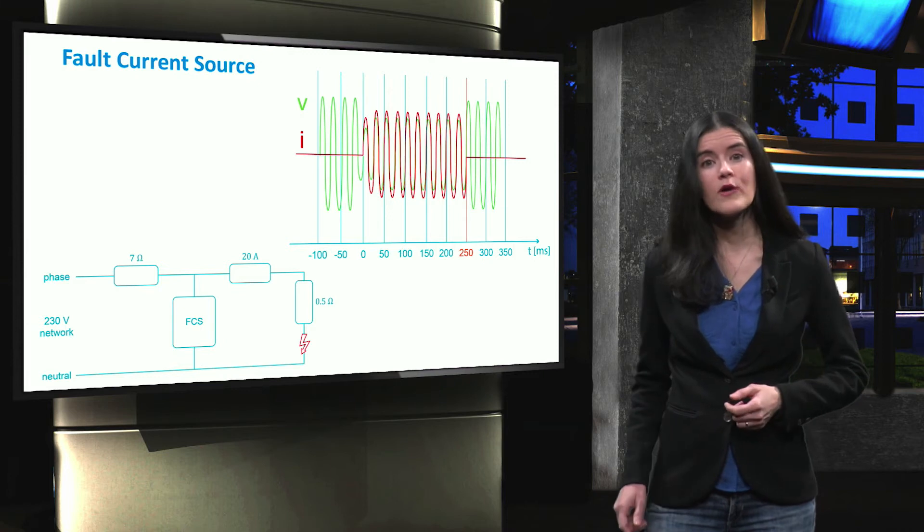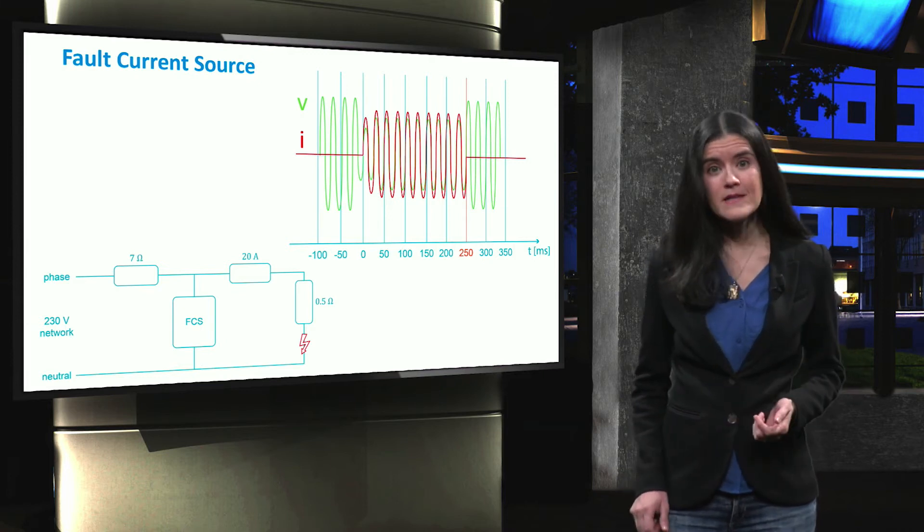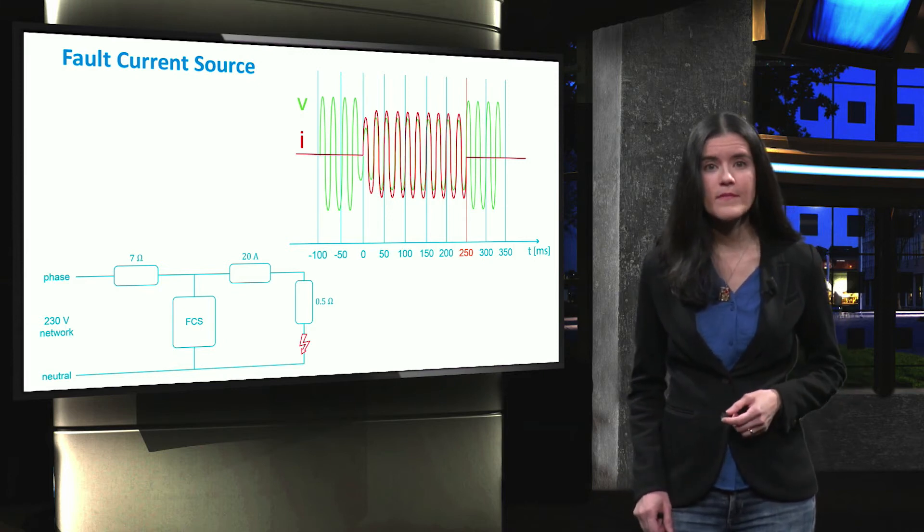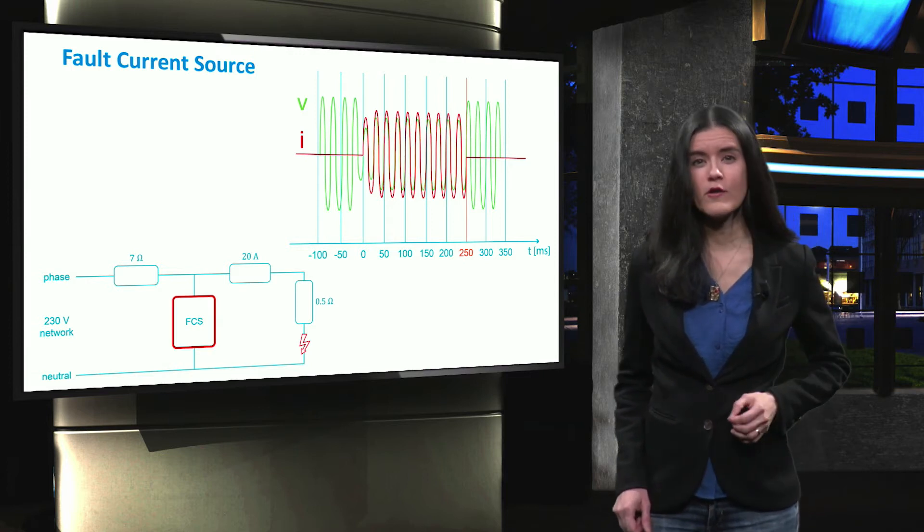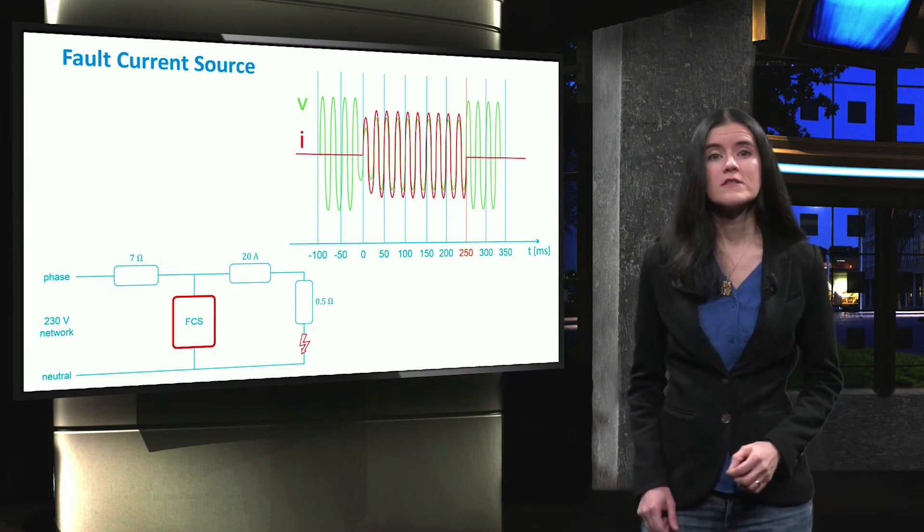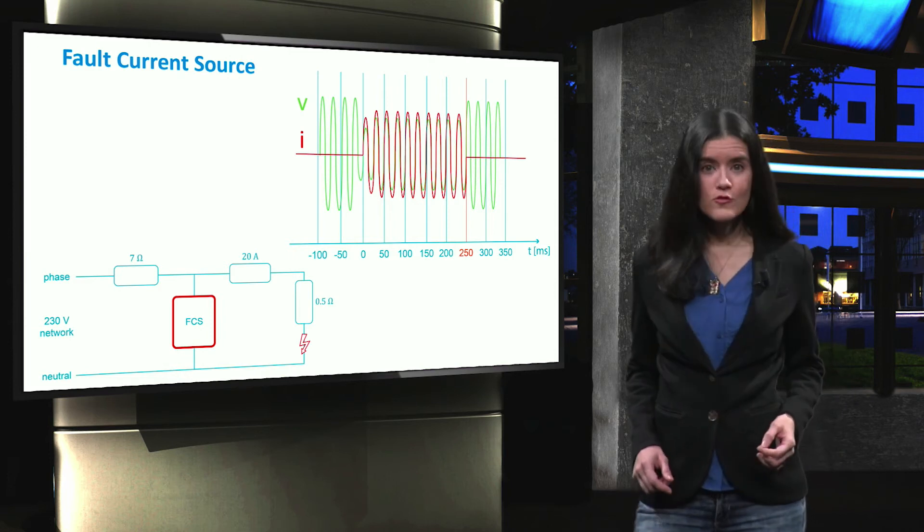Around t equals 250 milliseconds, the fault is cleared. The fault current source then stops its current injection and the voltage at its terminals goes back to its original value.